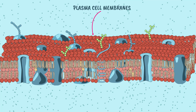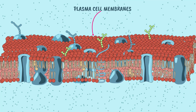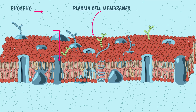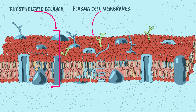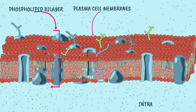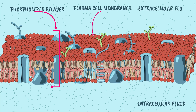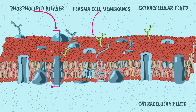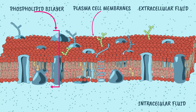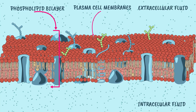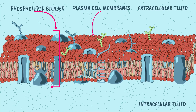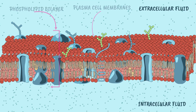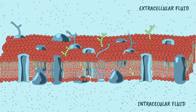Plasma cell membranes are extremely pliable structures made of a phospholipid bilayer that separates the inside of the cell from the outside. As you can see here, the membrane isn't rigid — it's fluid, and that's an important point to remember. Now let's break down its structure and composition.